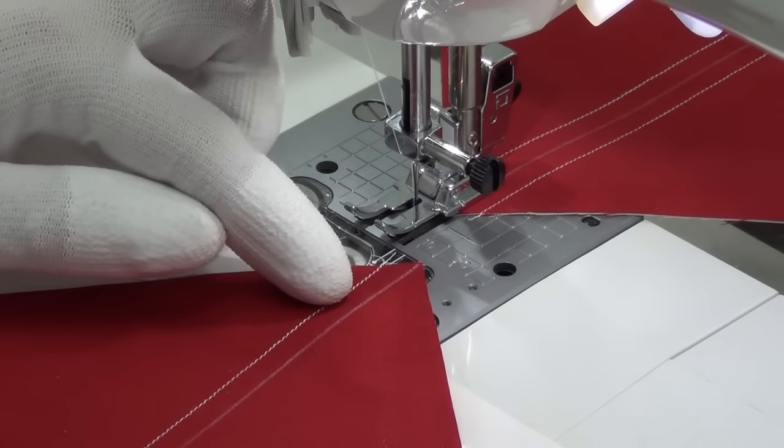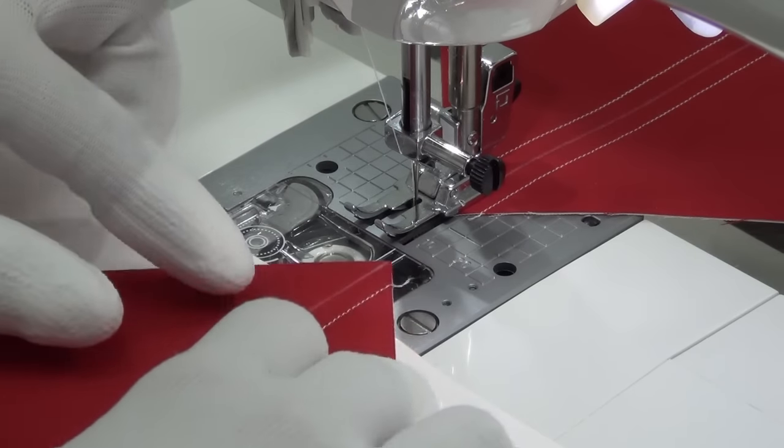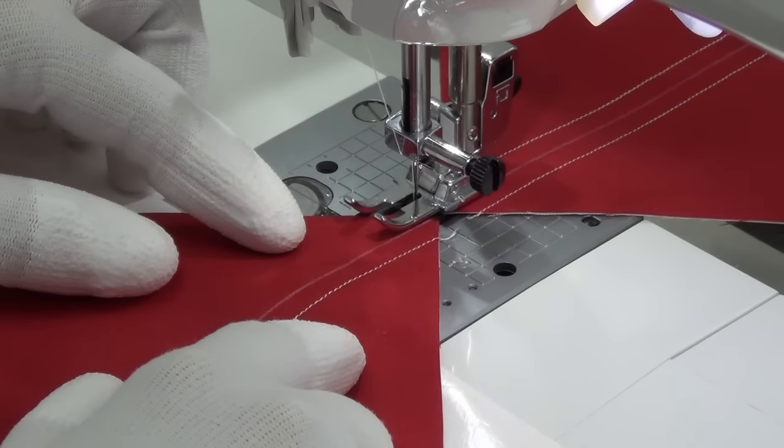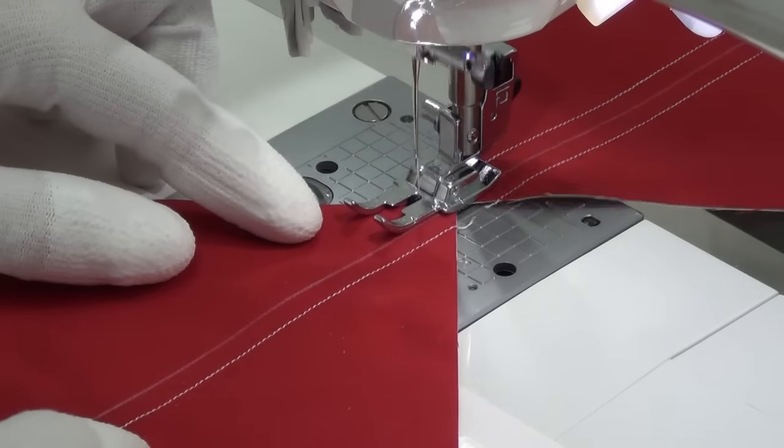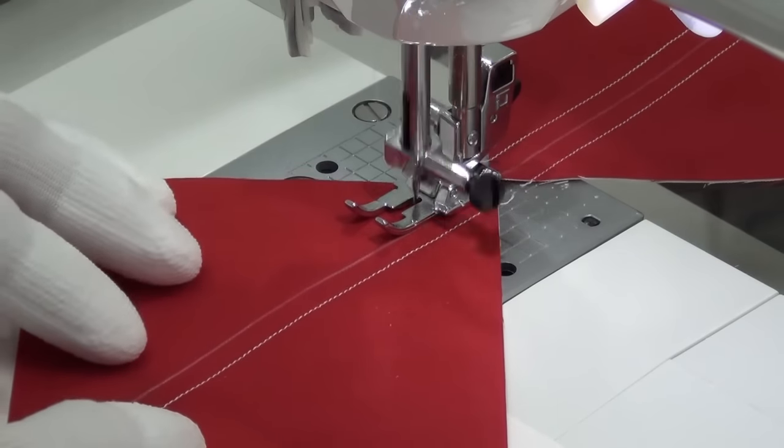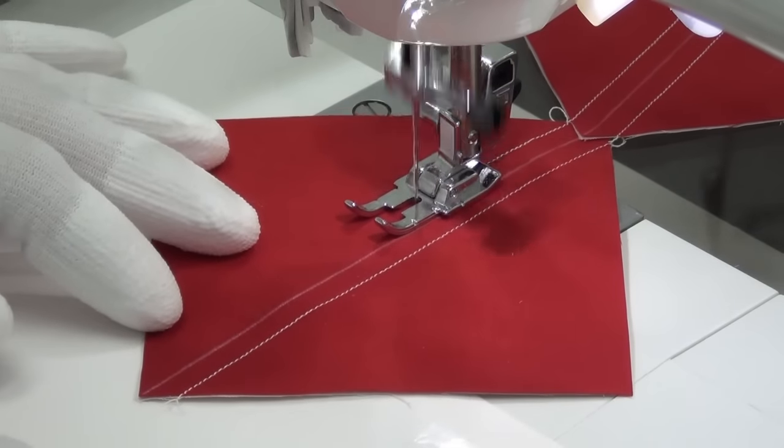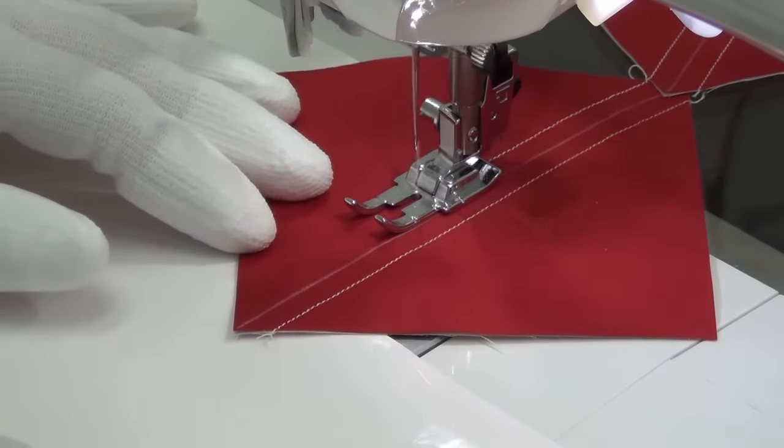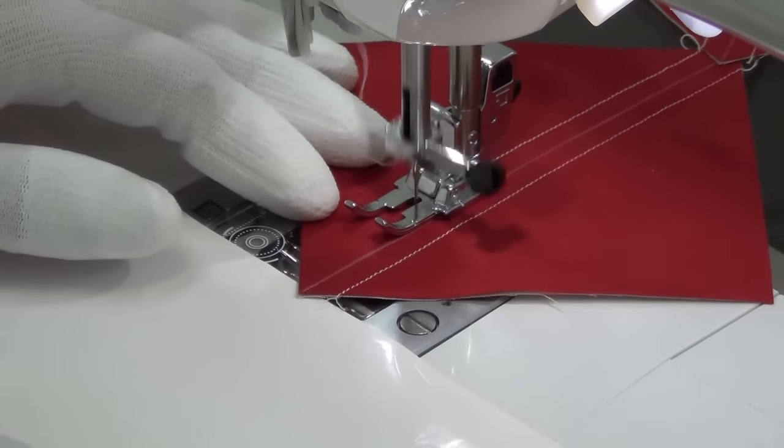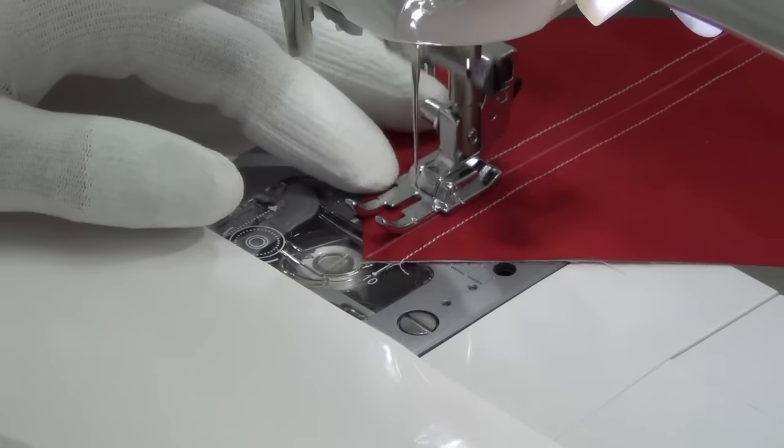Now that we've stitched a line to one side, we're going to rotate the block around, line up the edge of our presser foot with that marked line again, and stitch a quarter of an inch to the opposite side. This is how we create half-square triangles so that for every two squares that we stitch through, we create two half-square triangles.